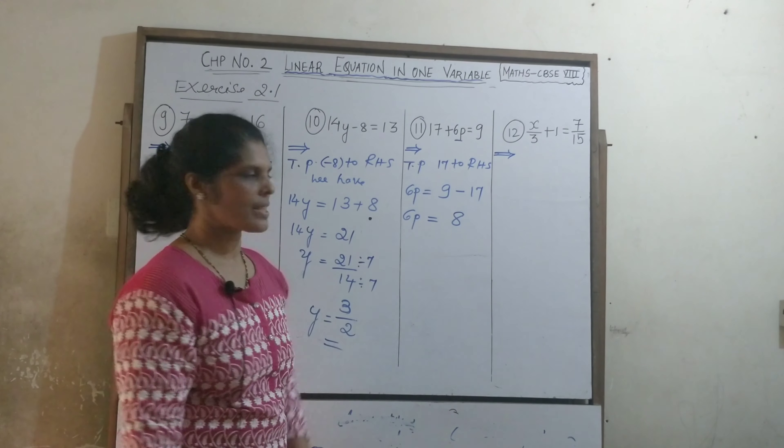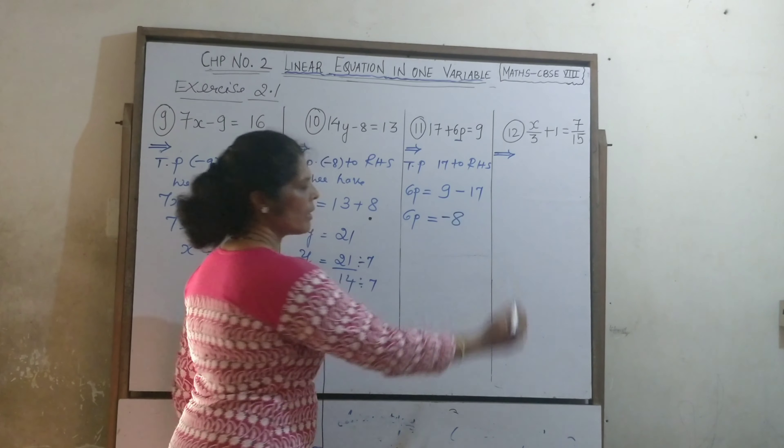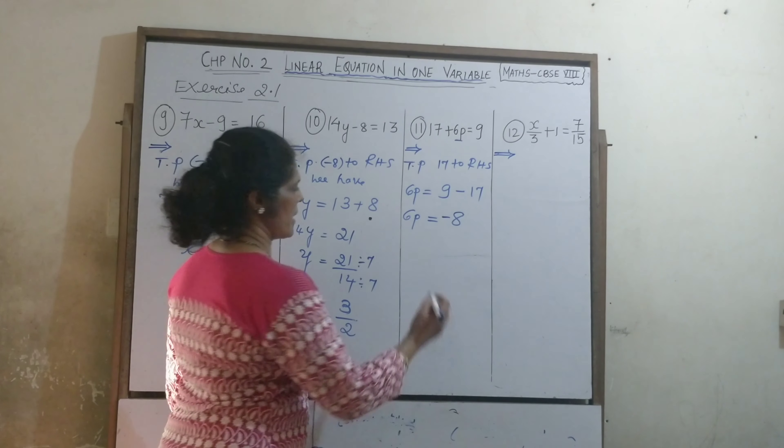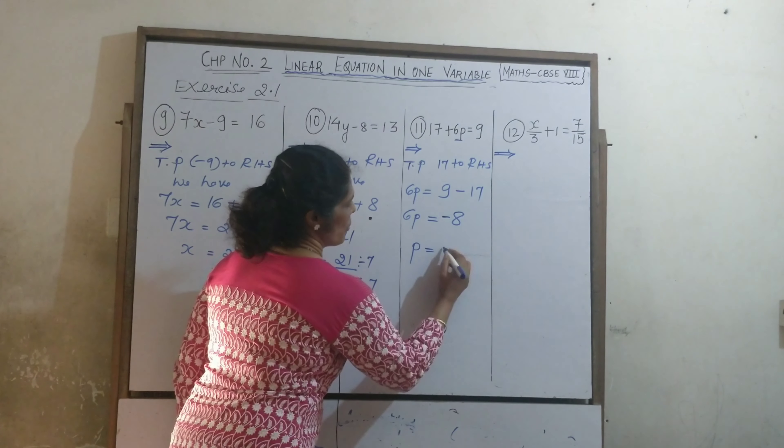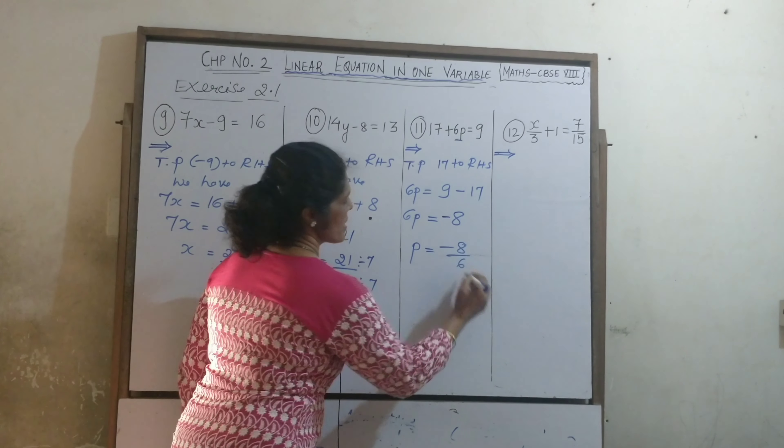One plus, one minus. So minus. When you have plus and minus, you subtract and take the sign of the bigger number. So, the bigger number is minus. Minus 8. Now what to do? We need the value of P. P is equal to minus 8 upon 6.